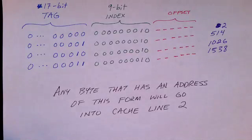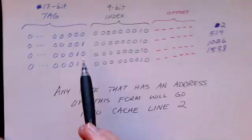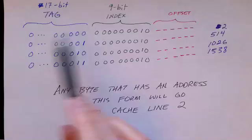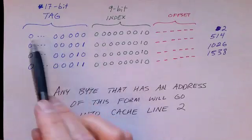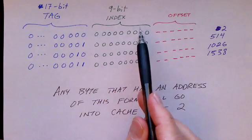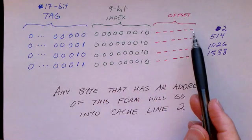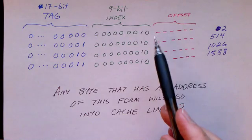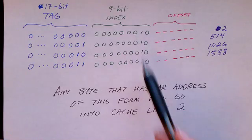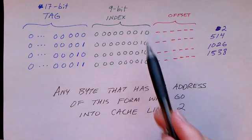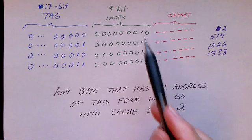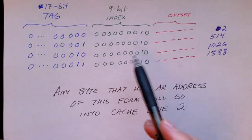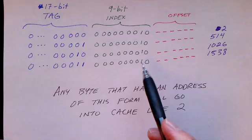But before we move on, let's look at what's going on here in a little bit more detail. The 32-bit address is broken up into 17 bits of the tag, 9 bits of the index, and then 6 bits to select the byte within the block. And in all these addresses here, the index is 2. Binary 10 is equal to 2. So all of these addresses will map into line 2 of the cache.